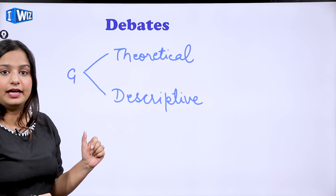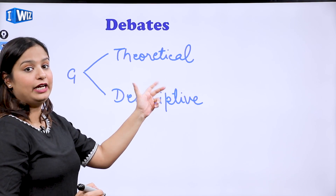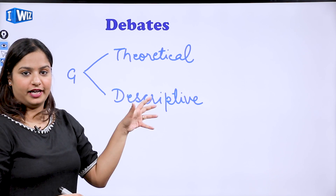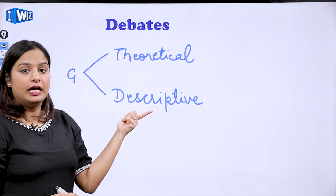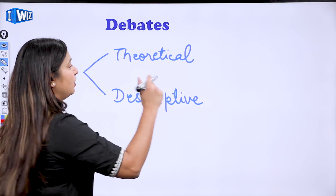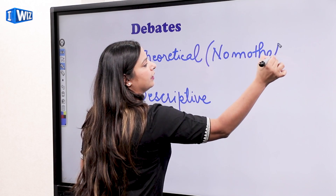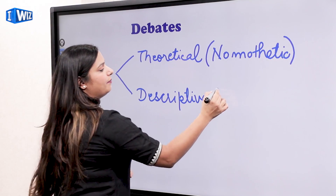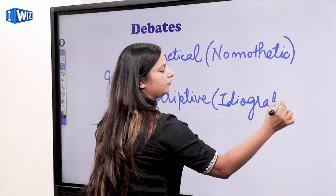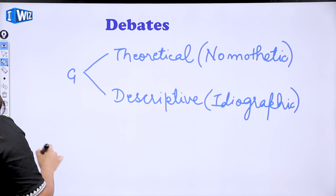Generally, two concepts were put forward to support arguments. The debate was: should geography be theoretical or descriptive? Should it be theory-based — nomothetic — or ideographic? So that debate existed.